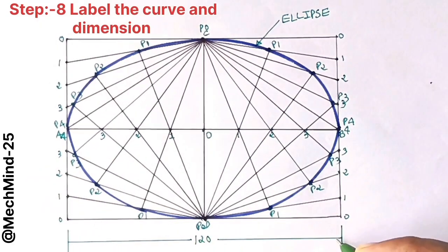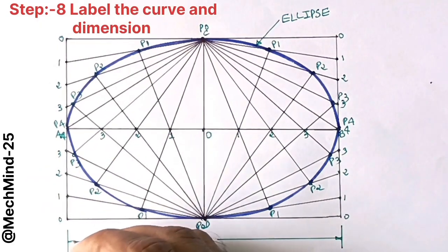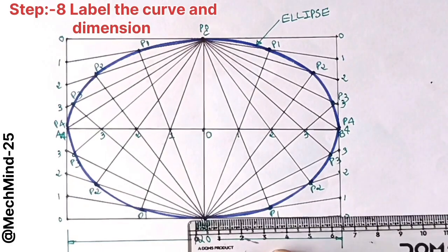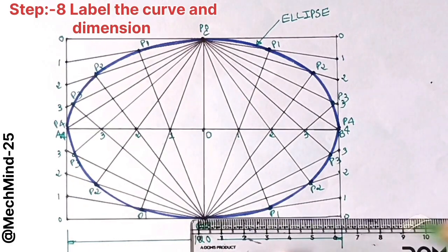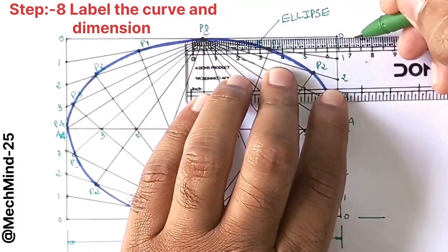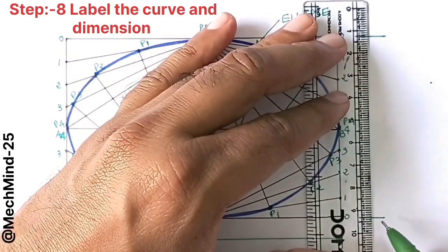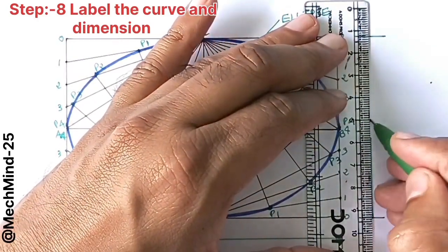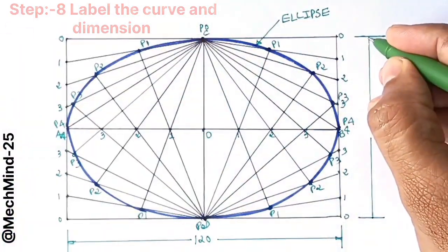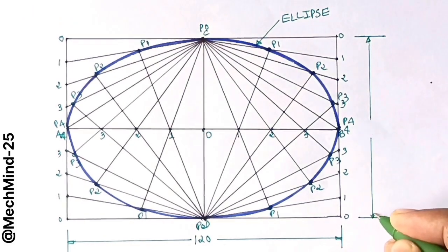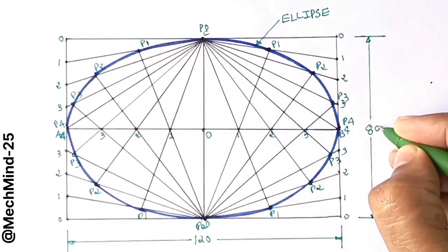So students, this is how you can draw an ellipse by the rectangle or oblong method. I hope you understood each step clearly. If you found this video helpful, please like the video, subscribe to the channel and press the bell icon to get notification for upcoming engineering graphics tutorials.